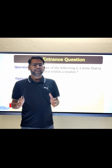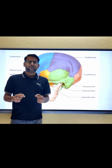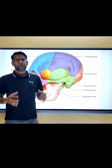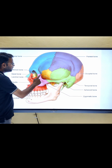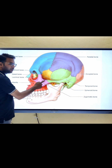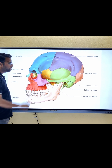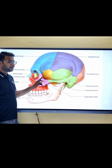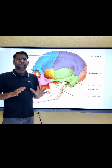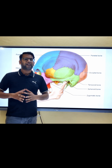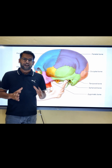Let's understand each option briefly. Option one: sphenoid bone. As you can see in this diagram, this is a sphenoid bone. It is a butterfly-shaped bone located at the base of the skull, and it is not embedded within any tendon. So this option is not correct.